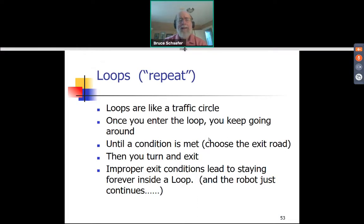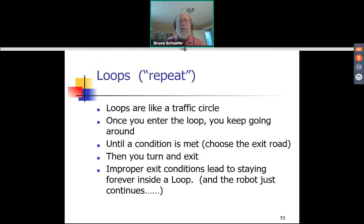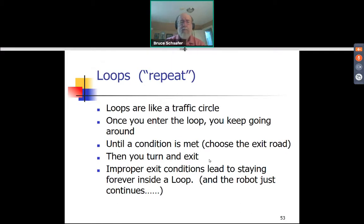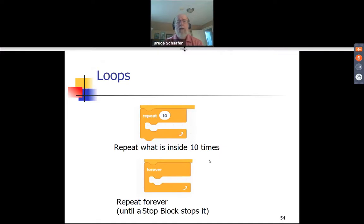There's no block in Scratch called 'loop,' but there are blocks that cause loops. One is called repeat. You can think of it like a traffic circle, although most traffic circles have multiple exits. The Scratch loop has a single exit, and you tell it when to exit by specifying the exit condition. If you give it a condition that's never going to occur, it will loop forever — and if the robot is moving, that means the robot will move until it runs into something.